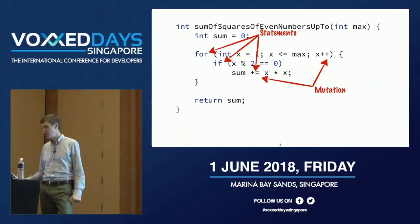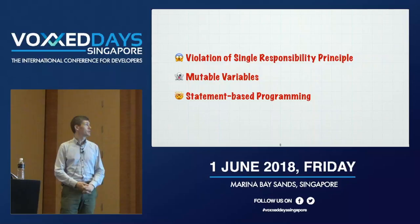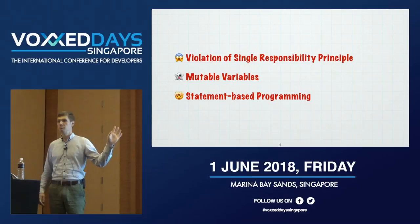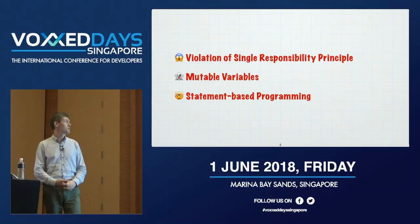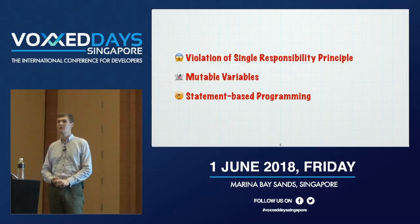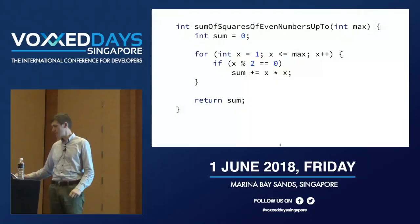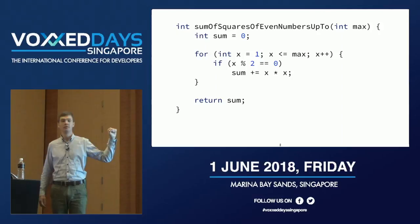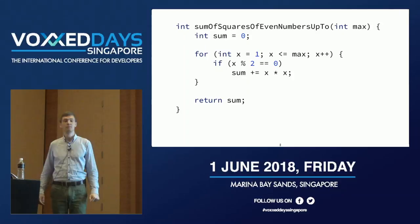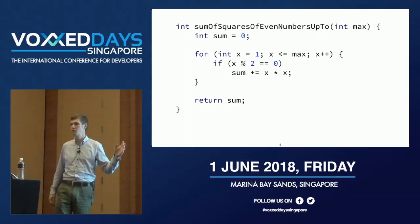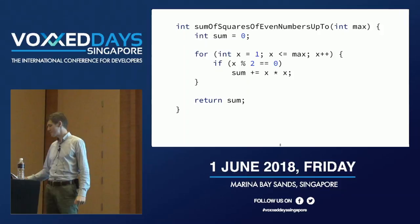Let's try to get rid of them through a series of refactoring. To recap: in this small piece of code, we've identified violation of single responsibility principle multiple times, multiple variables, and statement-based programming, which make this code harder to modify and refactor. Just imagine if I asked you to refactor it so you filter the sum of even squares — not squares of even numbers, but even squares. It's not undoable, but it's definitely not trivial in a program like this.